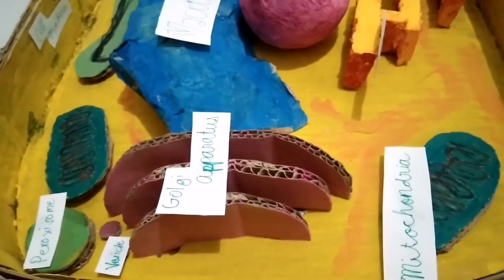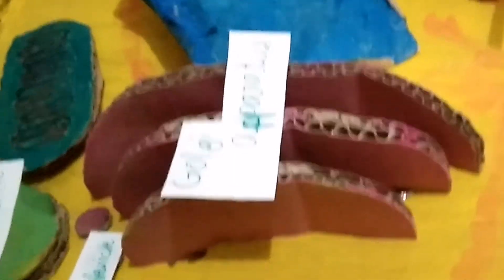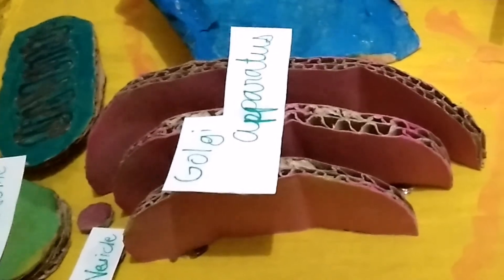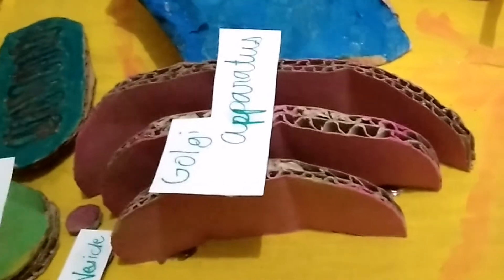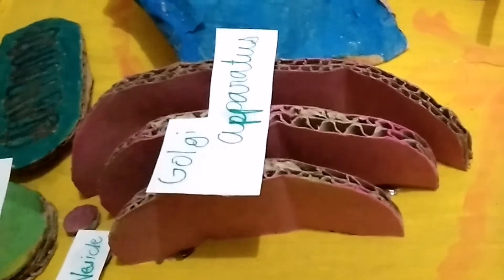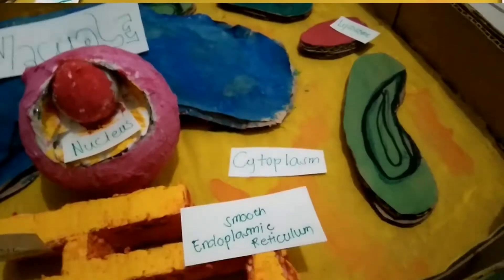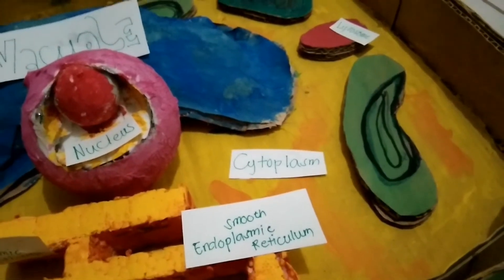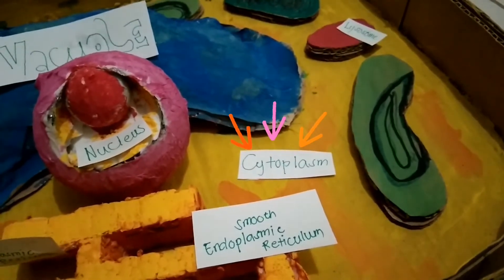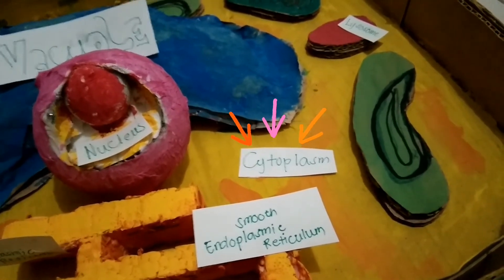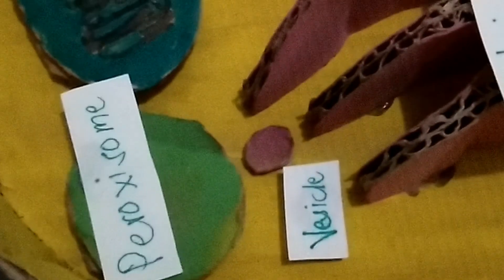Next is the Golgi apparatus — this is where proteins are processed, sorted, and delivered. The membranes of the Golgi apparatus have enzymes that further modify proteins. Next is the cytoplasm, which fills the space between the nucleus and the cell membrane. This is the vesicle.